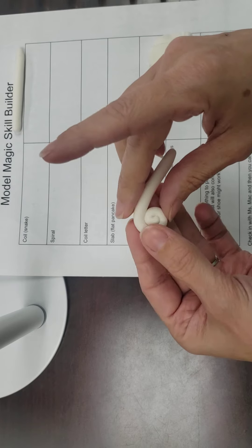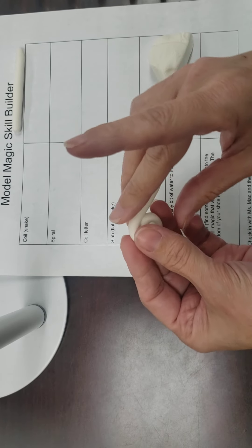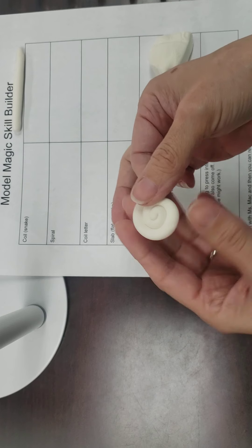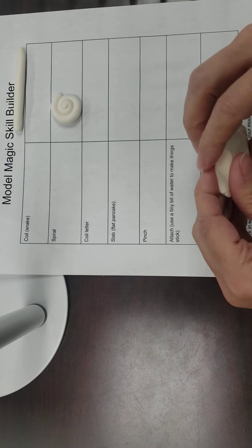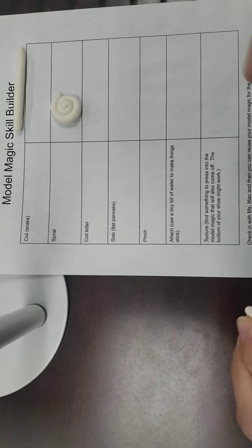And then for a spiral, what I'm going to do is take the end and just push this around and around and around. Okay, so that's my cute little spiral. A coil letter, so again trying to do this coil even thickness.